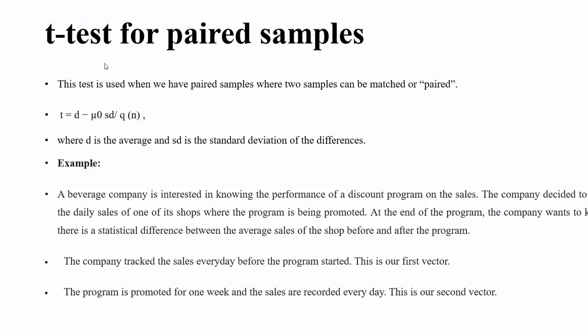Now let's see the t-test for paired samples, used for comparing means from the same group at different times. A company wants to check whether there is any improvement in sales after a sales campaign. Data is collected before and after the campaign. The null hypothesis is there is no difference in sales before and after the campaign; the alternate hypothesis is there is a difference. The test statistic is t = (d̄ minus mu0) divided by (sd divided by root n), where d̄ is the average and sd is the standard deviation of the differences.